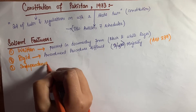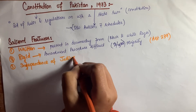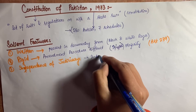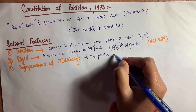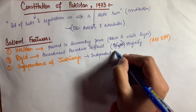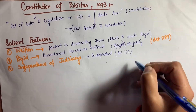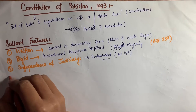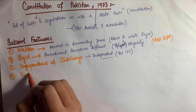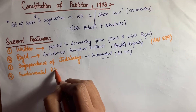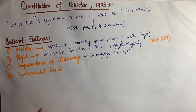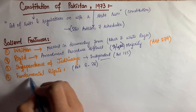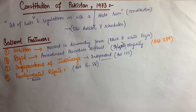The third main feature is independence of judiciary, meaning the judiciary is independent. Article 175 of the Constitution of Pakistan describes the independence of judiciary. The judiciary is independent of any other authority and does not depend upon any other authority to run itself.